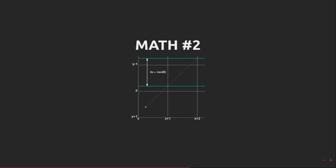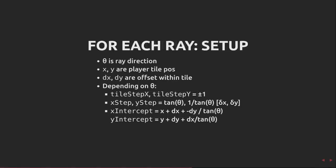These values are all correct for a ray that's pointing along the north-east quadrant of the circle. For other directions the x and y steps and the delta x and delta y need to be appropriately negated.